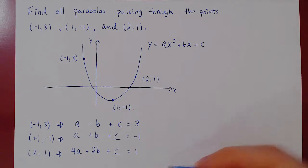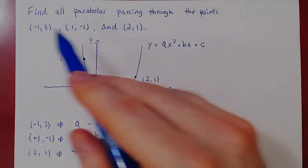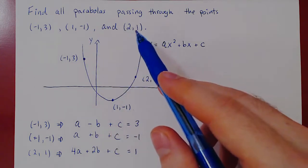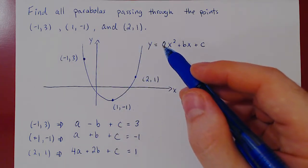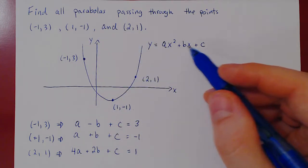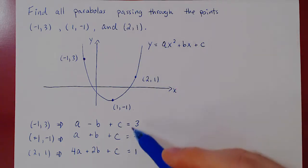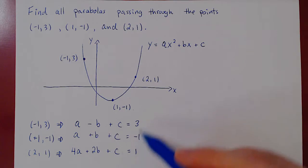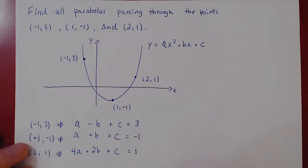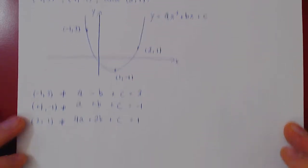And so you see, asking for all parabolas passing through these three points is the same as asking to find the variables a, b, c, the coefficients, which is the same as asking to solve this linear system. Now we're good to go. We, of course, construct the augmented matrix and row reduce.